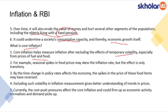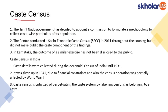That concludes the inflation and RBI article. The second article is about caste census, related to your GS2 paper. The Tamil Nadu government is planning to appoint a commission to formulate a methodology to collect caste-wise particulars of Tamil Nadu's population. Similarly, the center conducted the Socio-Economic Caste Census 2011 but did not disclose the caste findings. Karnataka did a similar exercise and also did not disclose the caste census data to the public.